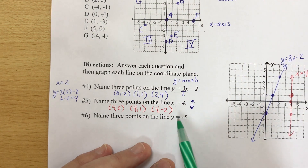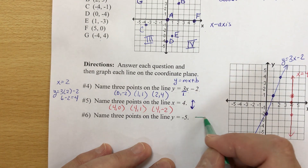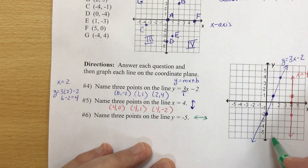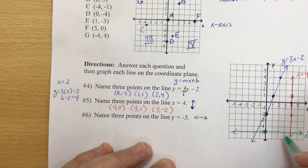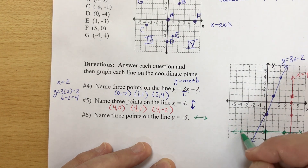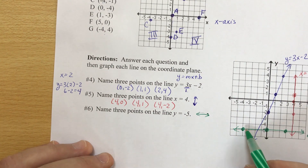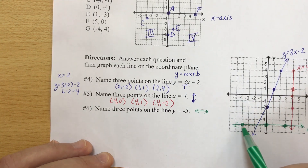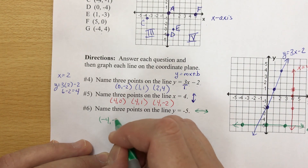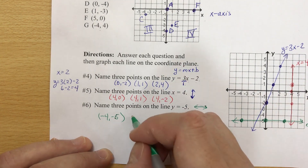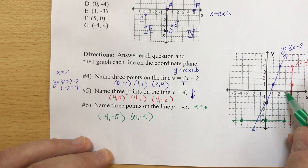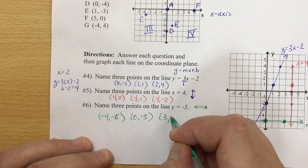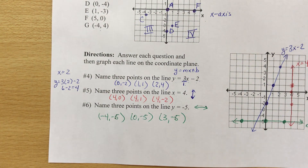For the last one, y = -5 is a horizontal line — go to -5 on the y-axis and draw a horizontal line. Three points on it are (-4, -5), (0, -5), and (3, -5). That is the end of the notes.